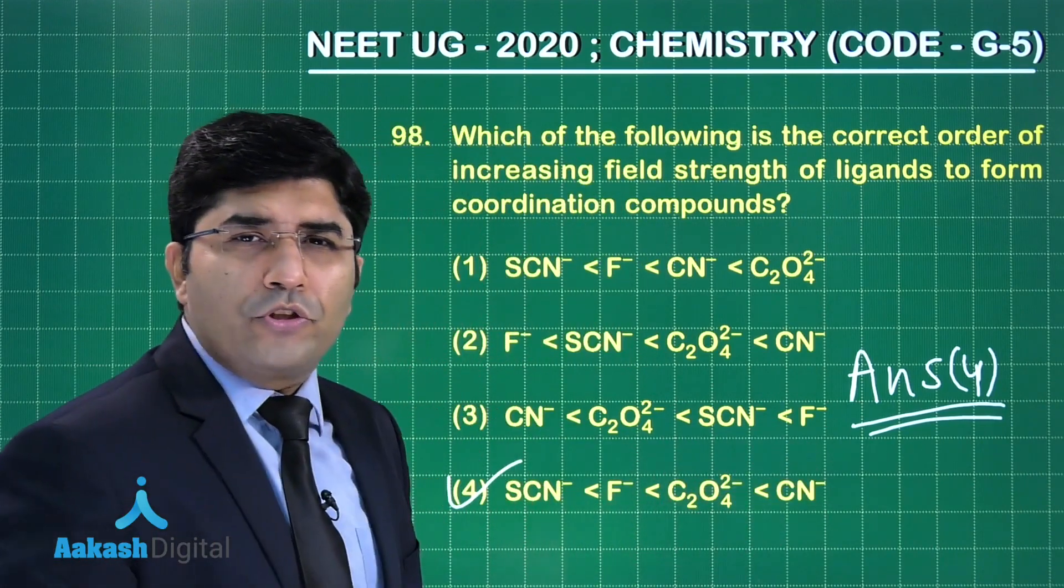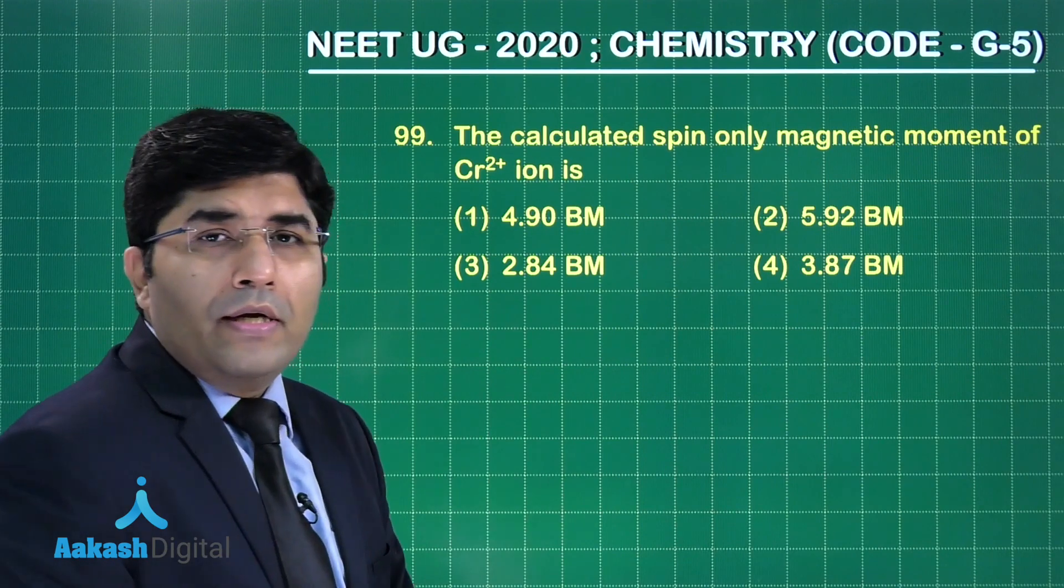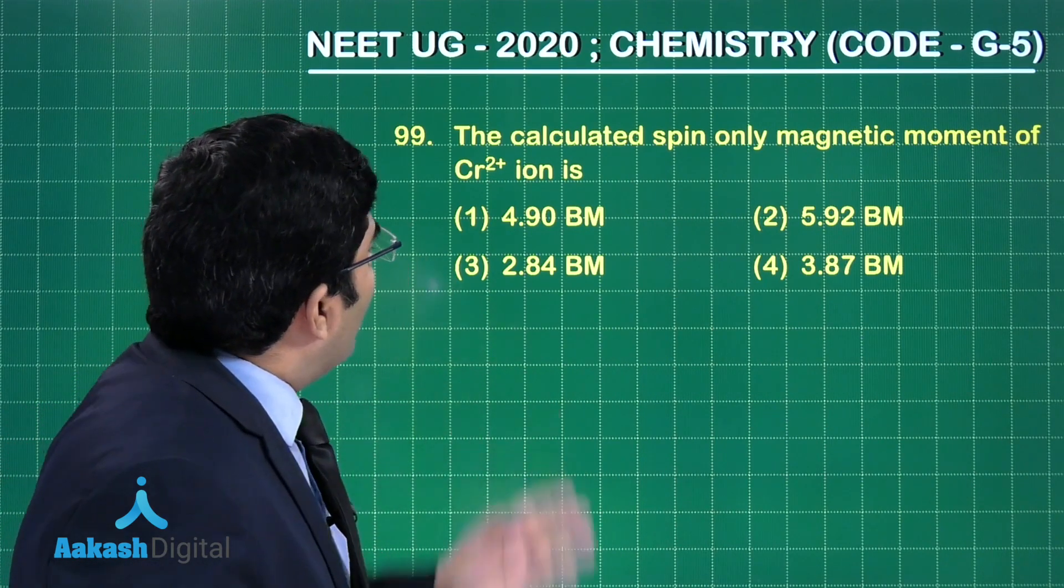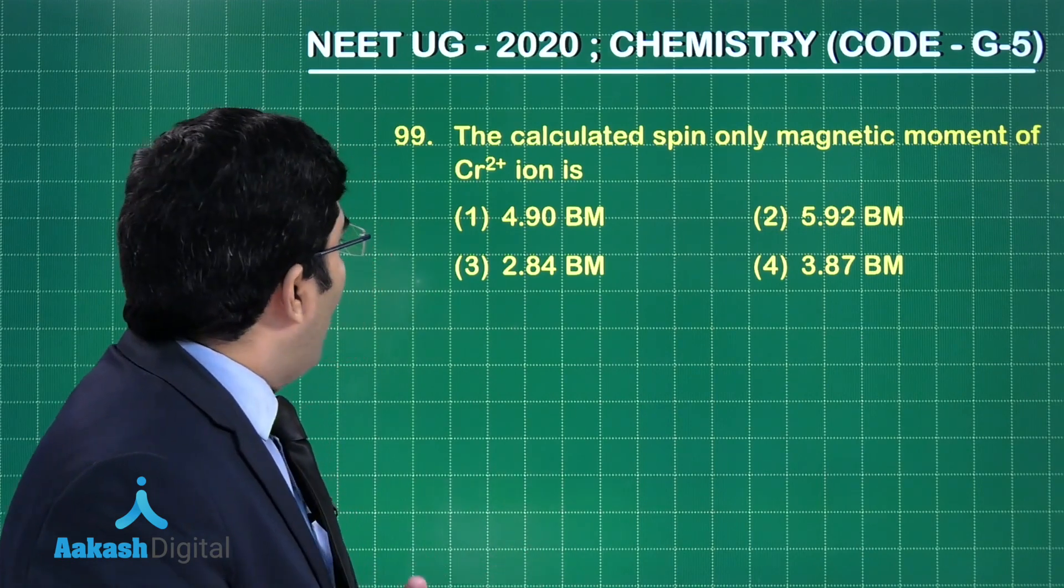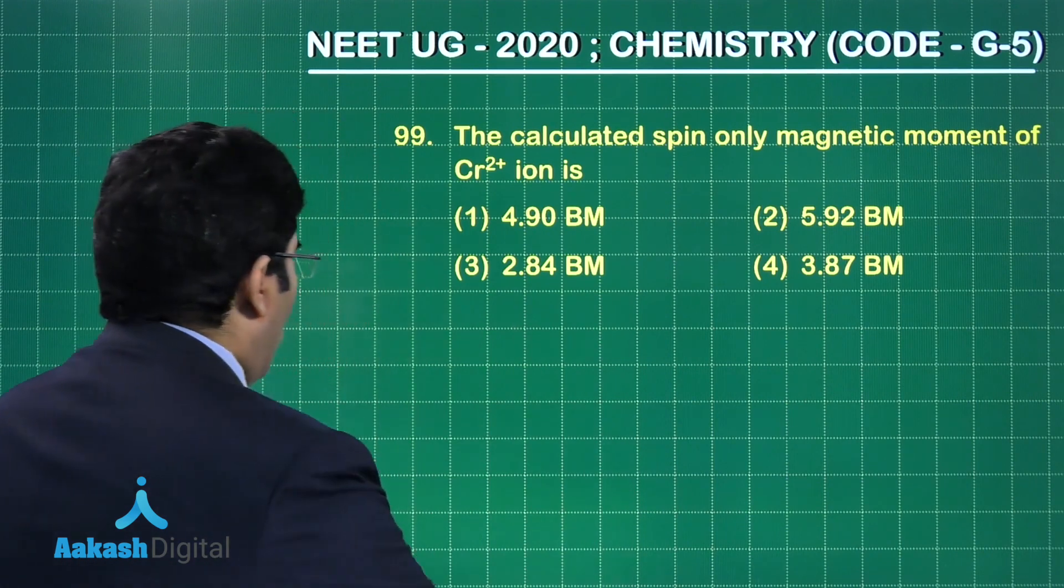Let's move on to the next question. Now this question is from d and f block elements, and the question is: the calculated spin-only magnetic moment of chromium 2+ ion is. Let's move on to the solution.